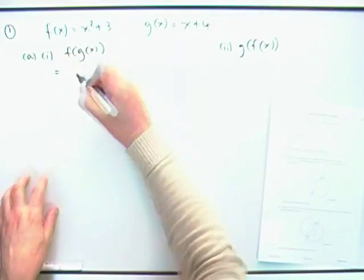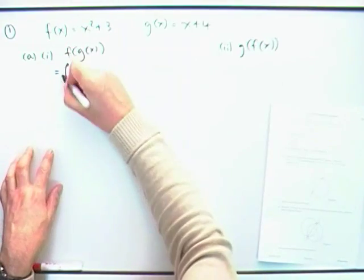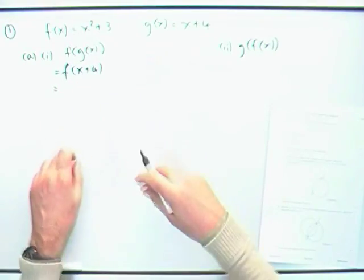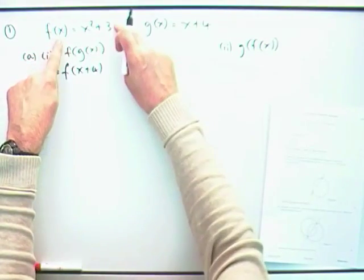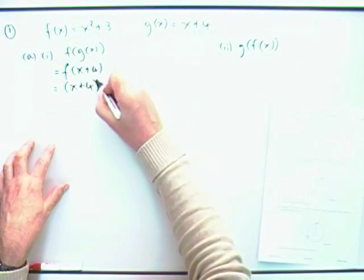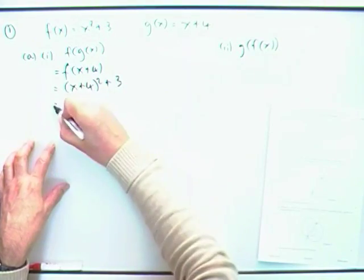Find f of g of x. Well, g of x is simply this, x plus 4, and then f acts on this. So f does what f does, which is, whatever it gets hold of, it squares it and adds 3. It's got hold of this thing, so it duly squares it and adds 3.